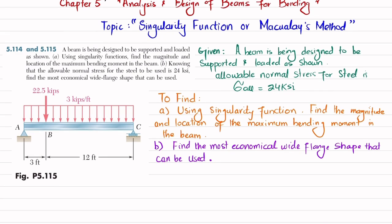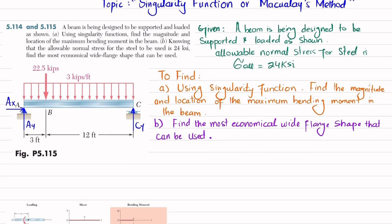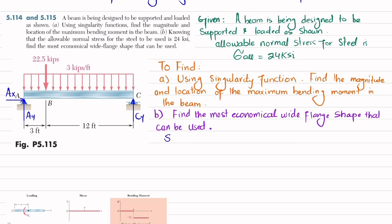Let's start with the solution. First step: if you remove the pin support, you will have a vertical reaction force Ay and a horizontal reaction force Ax. If you remove the roller support, you will have only a vertical reaction Cy. We will find these using the equations of equilibrium.